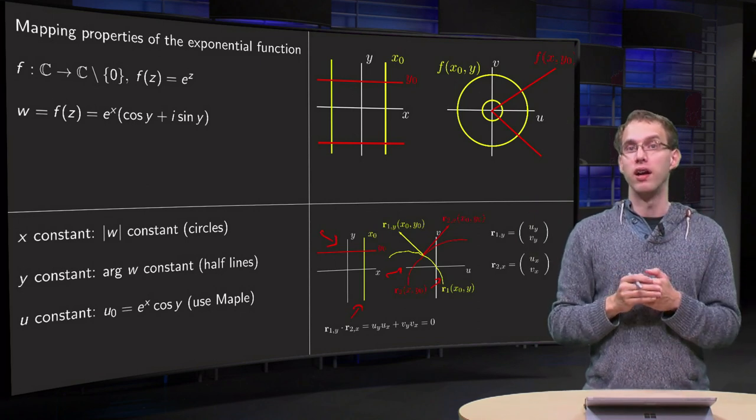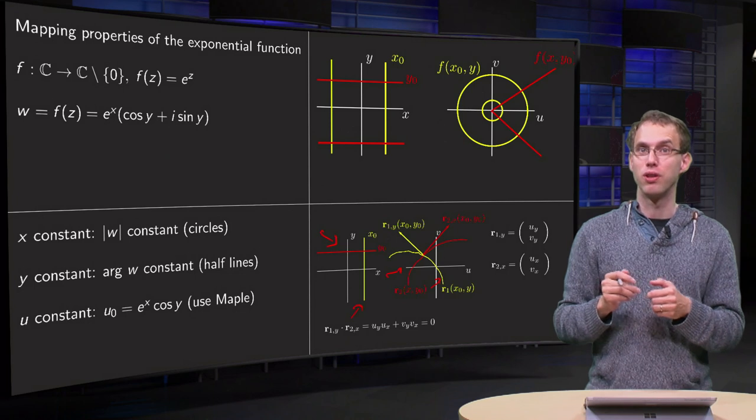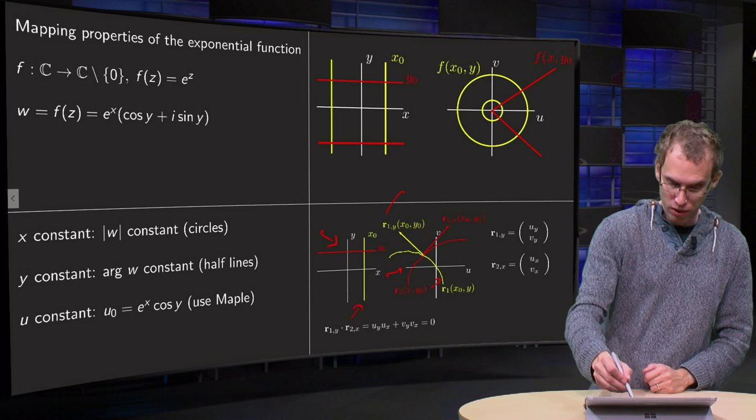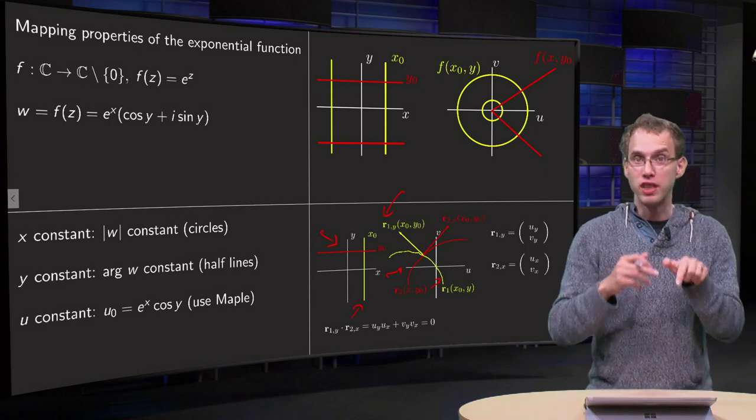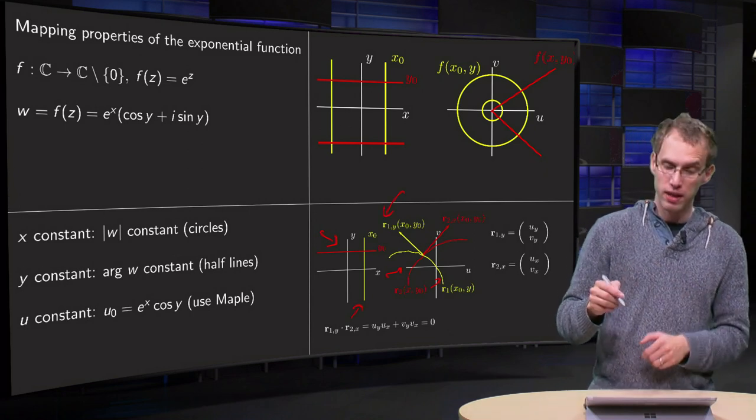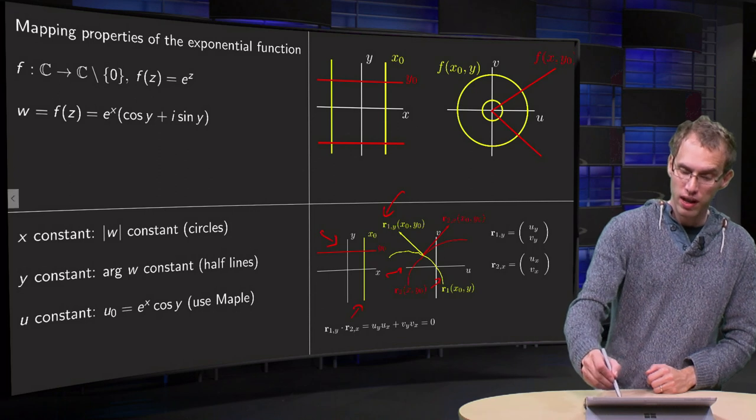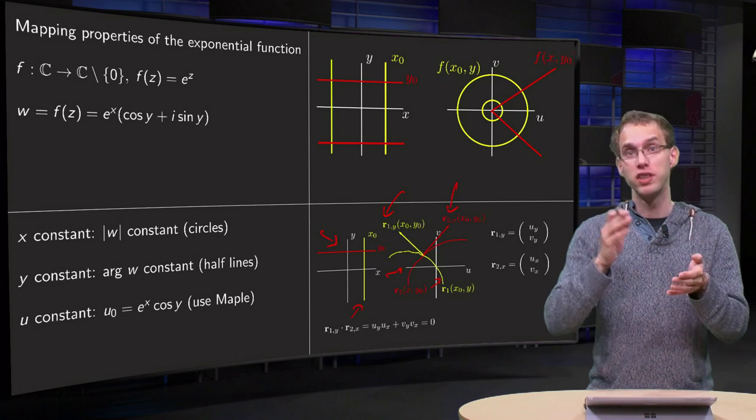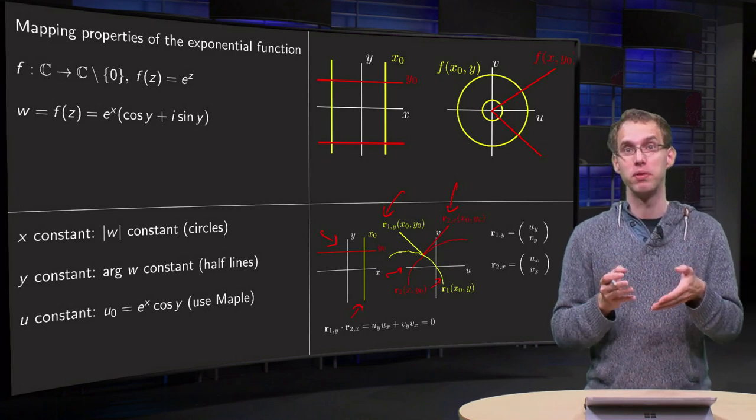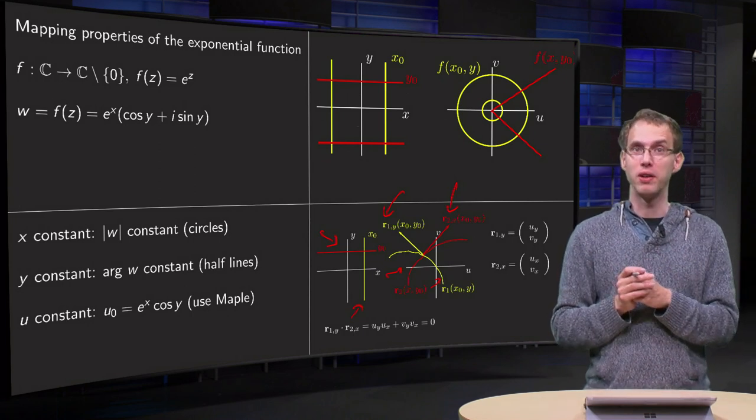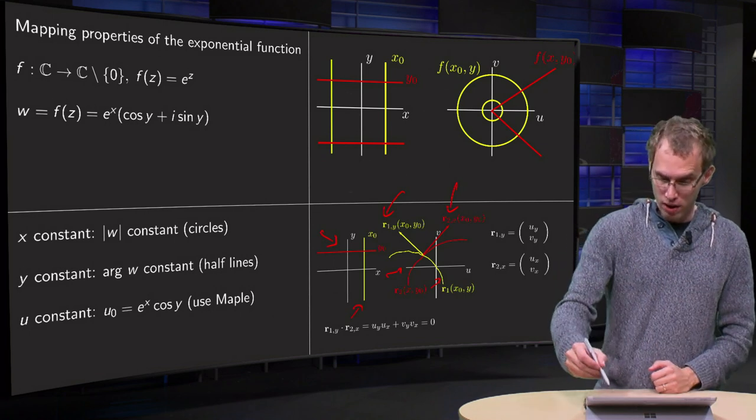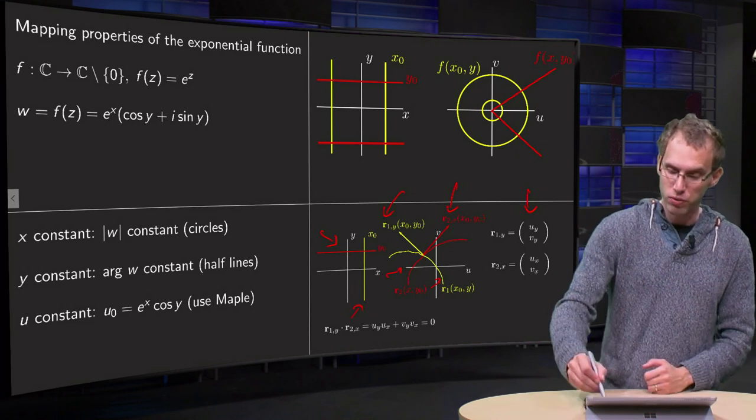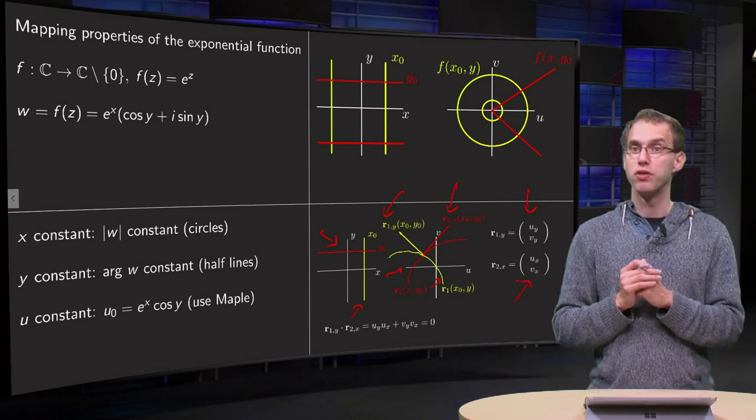Well, then you know if you want to get the tangent to your curve, you have to differentiate with respect to your parameter. So the tangent to the yellow curve is r1 differentiated with respect to y in the point (x0, y0), and the tangent at the point of intersection to the r2 curve is r2 differentiated with respect to x in the point (x0, y0). So r1 with respect to y equals (uy, vy), and r2 with respect to x equals (ux, vx).